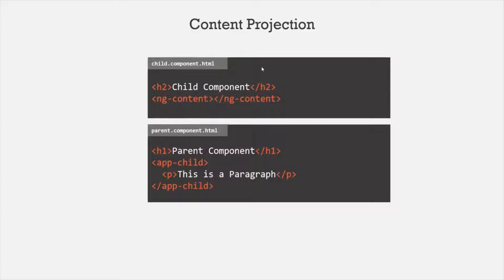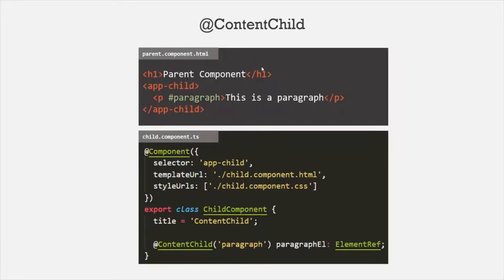Now let's understand what is the use of @ContentChild decorator. We use @ContentChild to access HTML elements, components, or directives from the view template of the parent component in the component class of the child component. Here we have the view template of the parent component, and in this view template we are using the selector of the child component. Inside this selector, we are specifying a paragraph element — this is the projected content. On this paragraph element we have used a local reference variable, and we want to access this paragraph element in our child component class. We cannot use @ViewChild here, because this HTML is not the view for the child component — it is the view for the parent component. For that, we can use @ContentChild decorator.